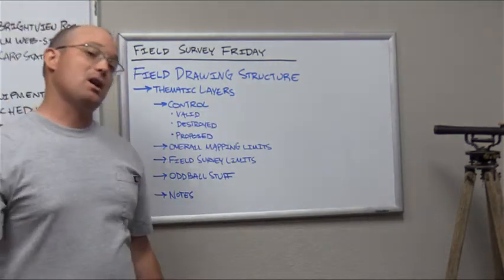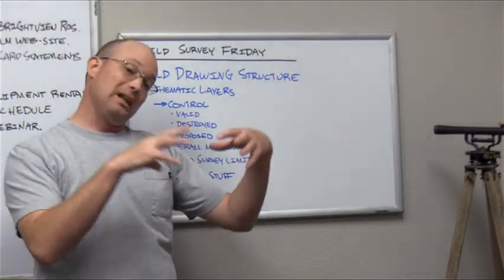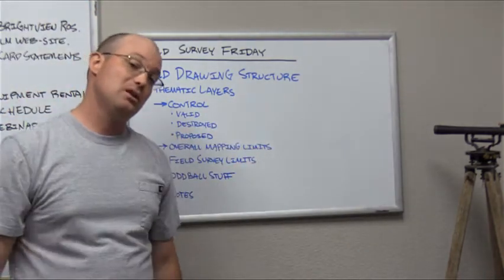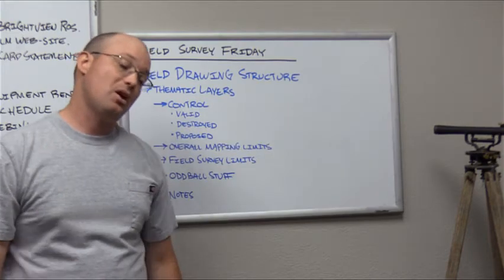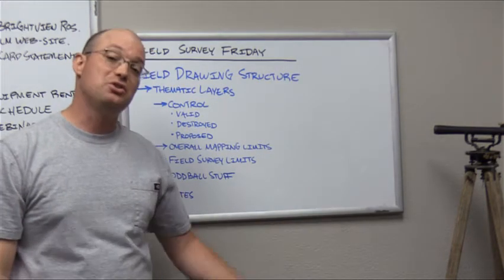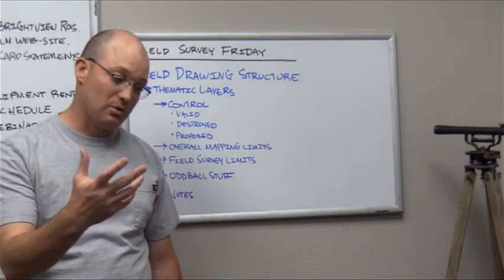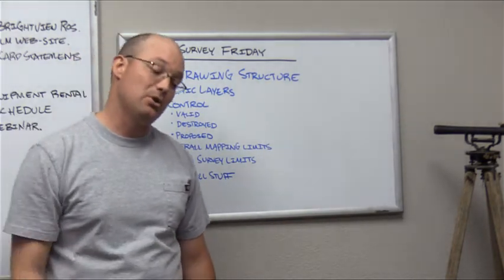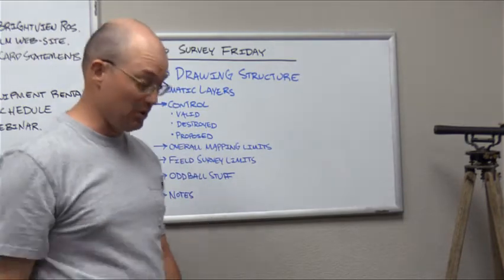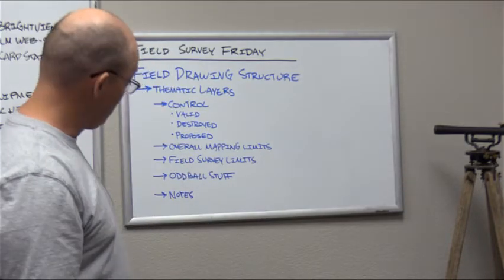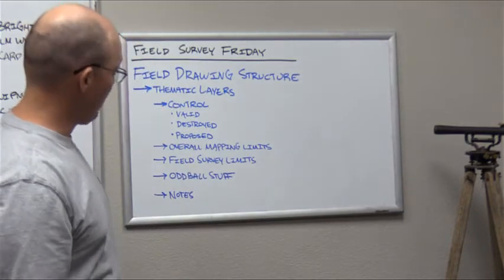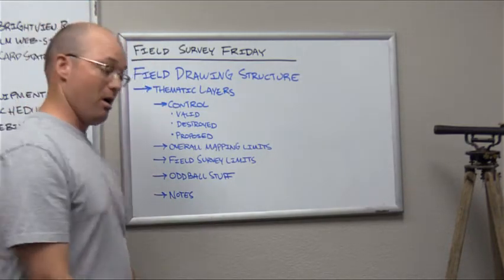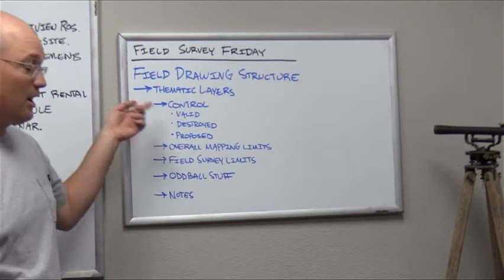We're going to start by talking about what layers we put into a field drawing. This could apply to GIS, but we do it in CAD — though there's no reason you couldn't do it in GIS. So what are our thematic layers in our field drawing?